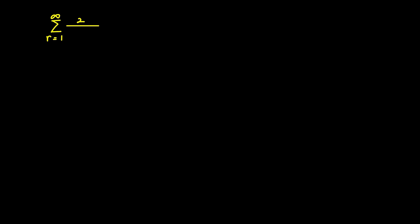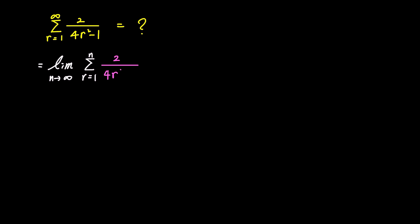Here's the first example. Let's find the value of the sum of 2 over 4r squared minus 1 as r goes from 1 to infinity. When expressing this infinite sum as the limit as n approaches infinity, we can represent it as the sum of 2 over 4r squared minus 1 as r goes from 1 to n. We aim to transform this infinite sum into a finite sum up to n, simplify the expression, and then utilize the limit as n approaches infinity.